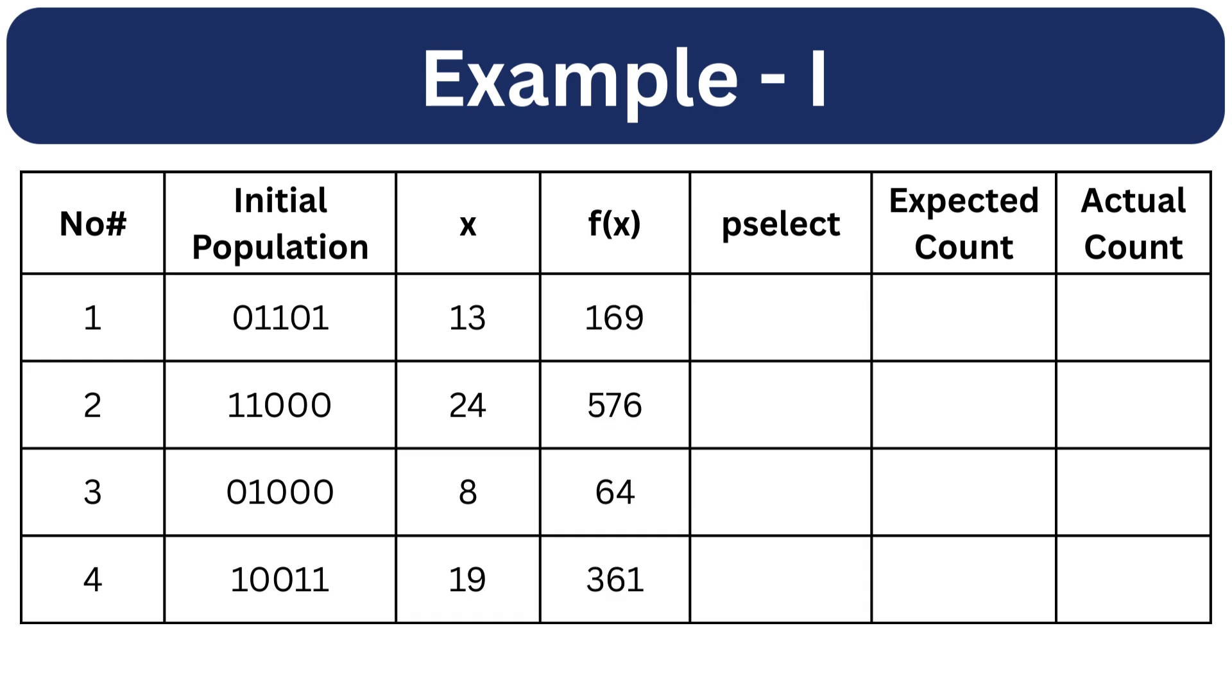Then we have calculated the fitness of each individual by applying the function f equals to x square. So square of 13 is 169, square of 24 is 576 and so on.